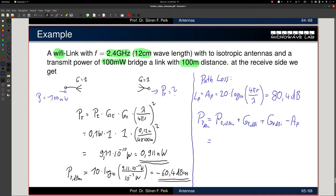So P transmit in DBM is here. 100 milliwatts. 100 milliwatts in DBM. You can do the math. It's 1 milliwatt is 0 dBm. 10 milliwatts is 10 dBm. 100 milliwatts is 20 dBm.